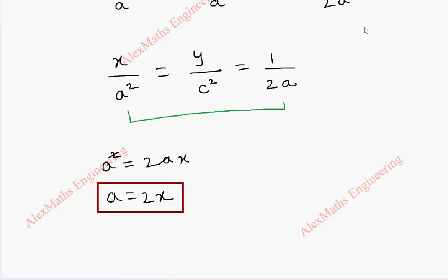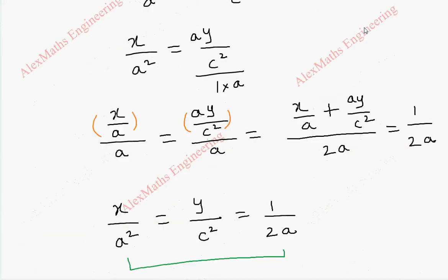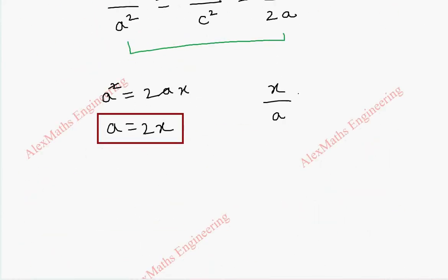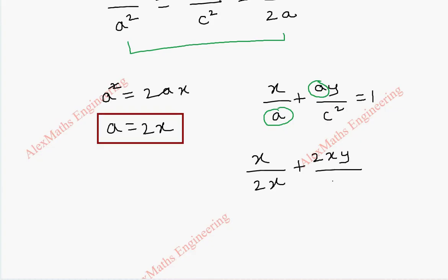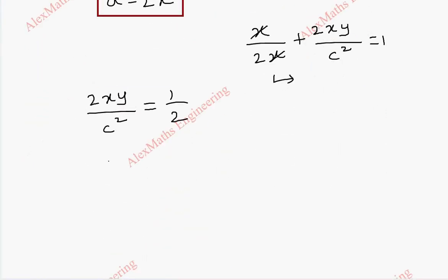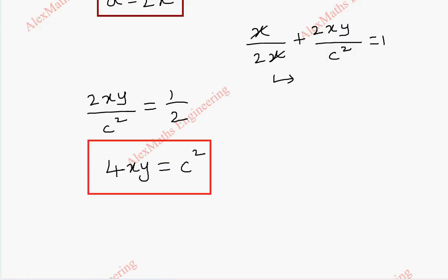We substitute a = 2x back into x/a + ay/c² = 1. This gives x/2x + 2xy/c² = 1, which simplifies to 1/2 + 2xy/c² = 1. So 2xy/c² = 1/2, and by cross-multiplication, 4xy = c². This is our required equation of the envelope.